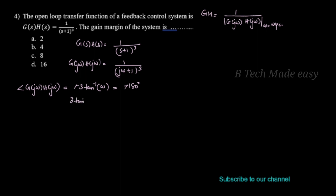The two negative signs cancel, giving 3·tan⁻¹(ω) = 180°. Therefore tan⁻¹(ω) = 60°. So ωpc = tan(60°) = √3. This is the phase crossover frequency.